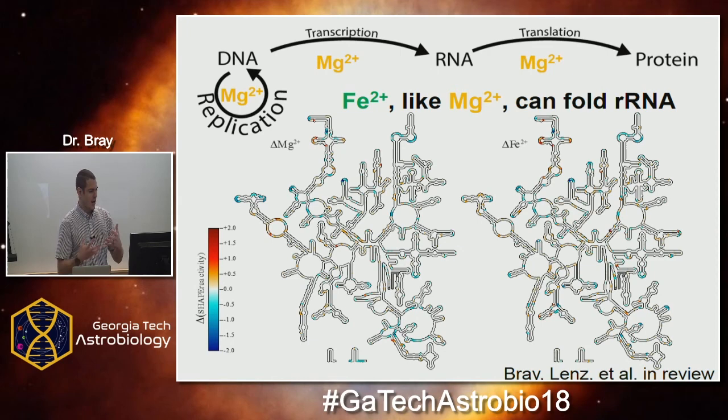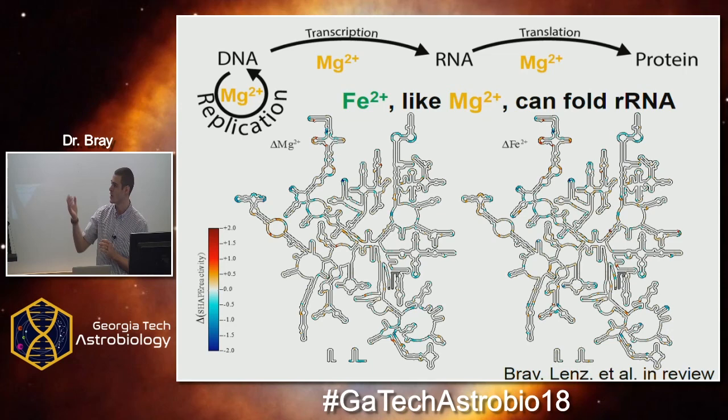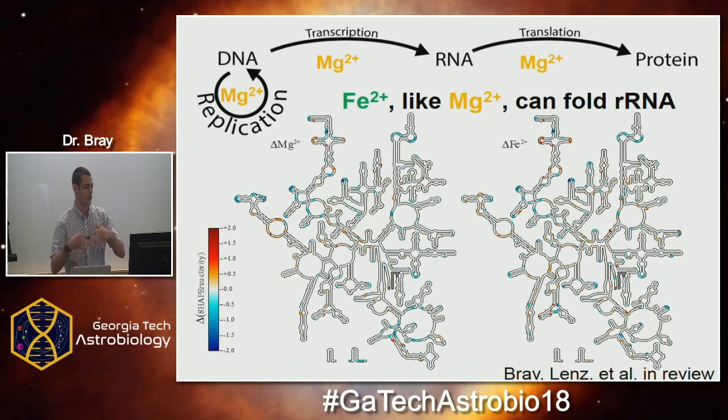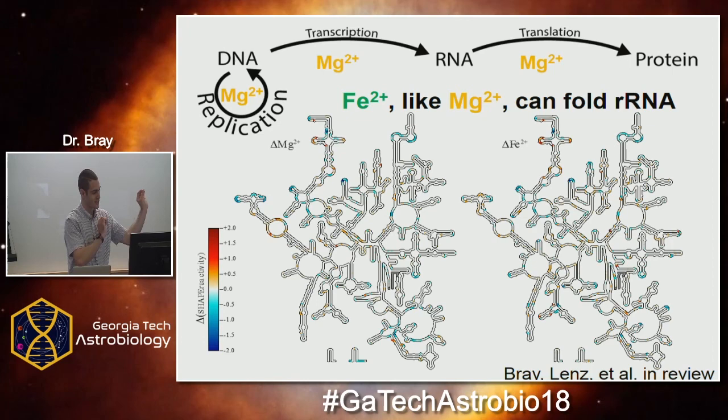We've also shown that iron can mediate the folding of nucleic acids. This is the 23S large subunit ribosome RNA, shown as a heat map of places where structural changes have been induced with the addition of either magnesium or iron. The structural changes that magnesium induces are broadly similar to those iron induces — where it's red in the magnesium map, it's red in the iron map; where it's blue, it's blue.